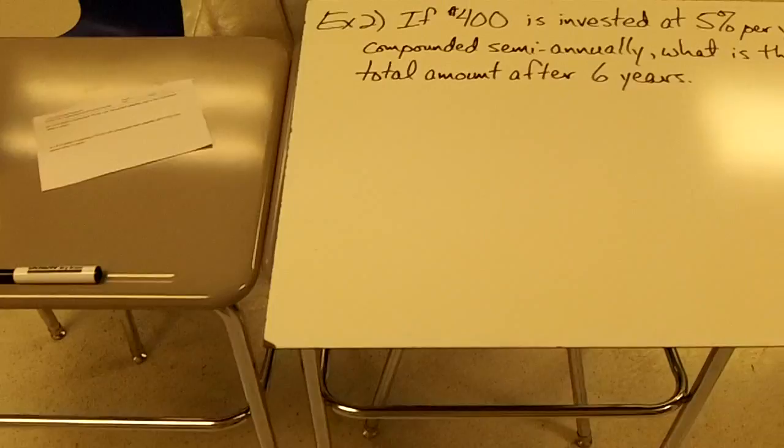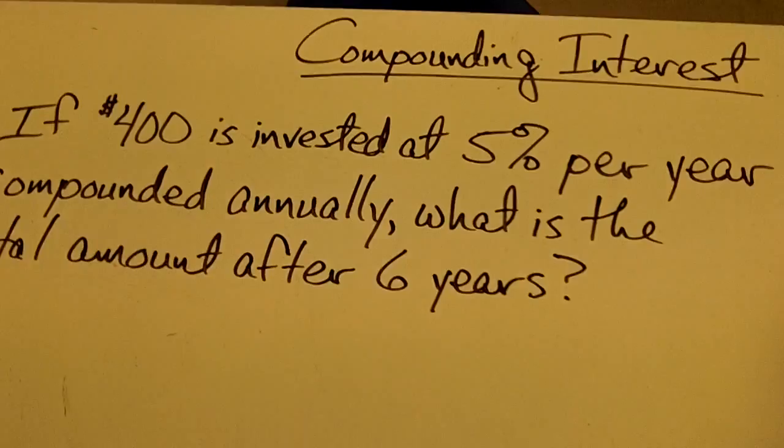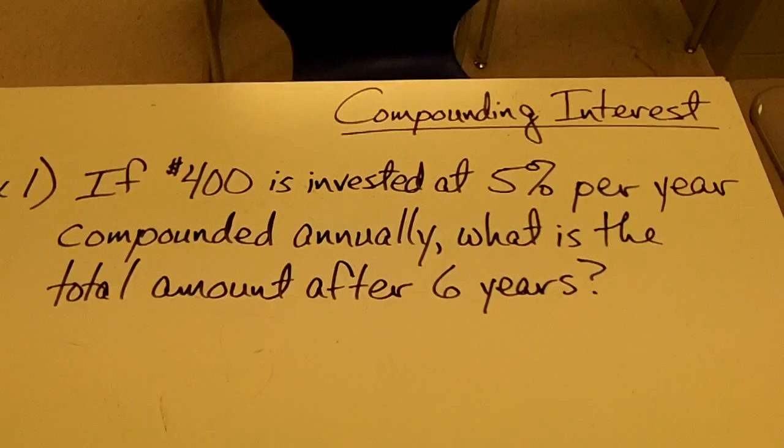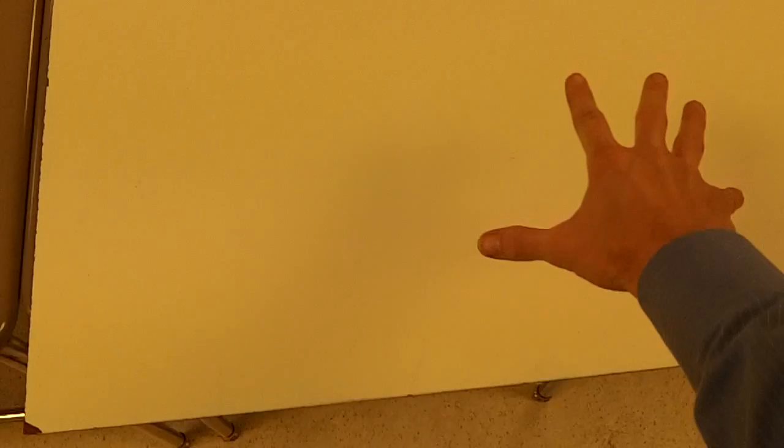Now I've got my two whiteboards prepared. This is board number one — up in the top right corner I've got the name of the video, which is compounding interest, and I've got example number one copied from my notes. I'm going to use the space down here to actually work out example one. Board number two is just example two, and I'll use the bottom part of that board to work out example two.